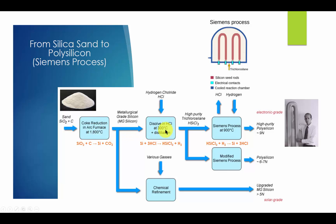Step 2: The silicon is still not pure enough for semiconductor chip makers, so it is ground into a fine powder, mixed with hydrogen chloride, and heated at 300 degrees C. This process produces trichlorosilane, a liquid at room temperature.